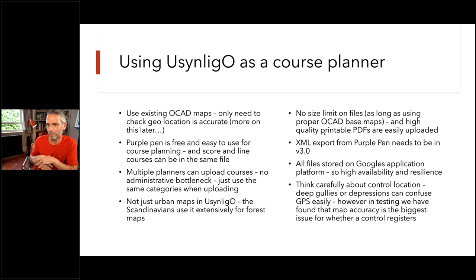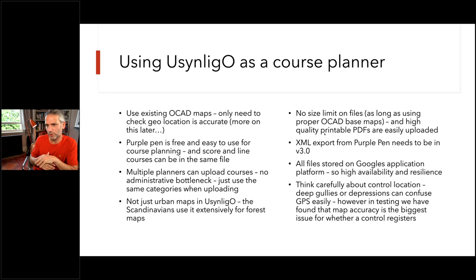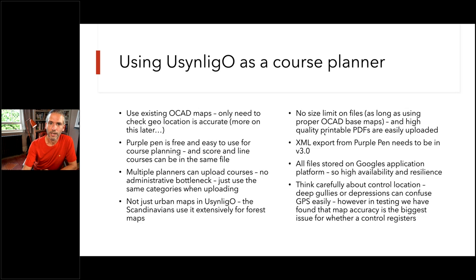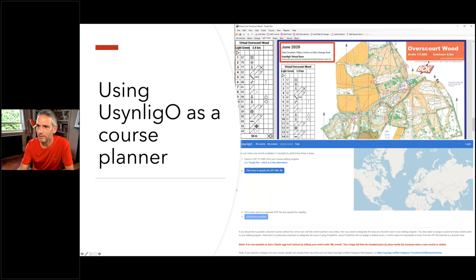There's no file size limit since they're all PDFs — they can be high-quality printable maps and they're not huge files — so we don't have the same upload size limitations we found with MapRun. The one thing to be aware of is that when you export from Purple Pen it needs to be in version 3 XML format — an easy mistake to make the first time, but it's a simple dropdown. Let me show a quick demo in Purple Pen.